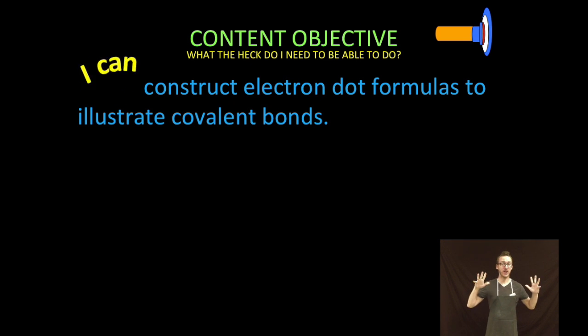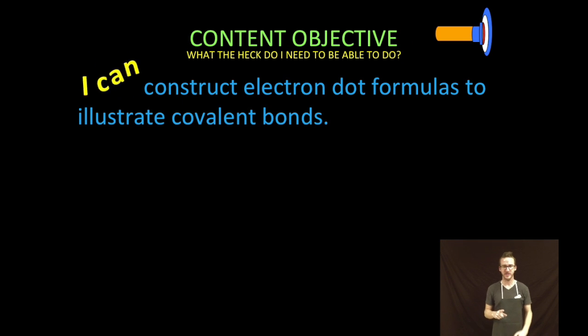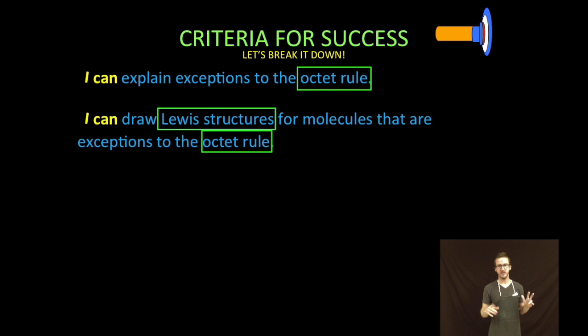In this video we are going to construct electron dot formulas to illustrate covalent bonds. Specifically we are going to explain exceptions to the octet rule and draw Lewis structures for molecules that are exceptions to the octet rule.